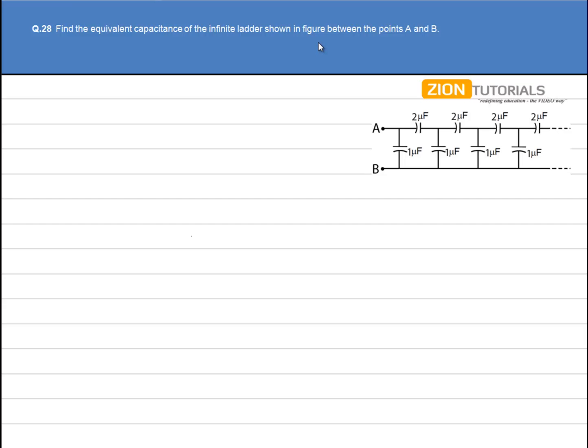Find the equivalent capacitance of the infinite ladder shown in the figure between points A and B. In this figure we have 1 and 2 microfarad capacitors, and they are formed in the form of a ladder.